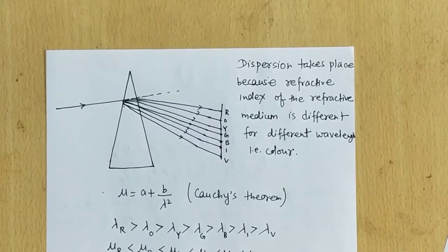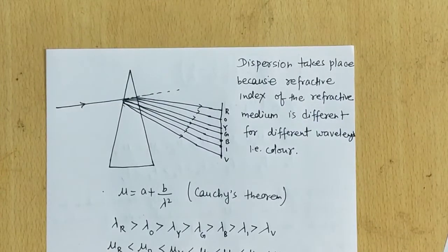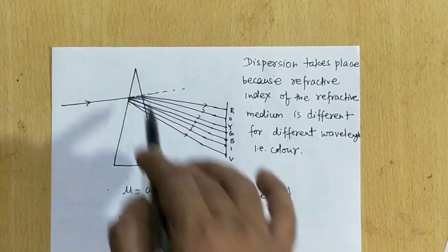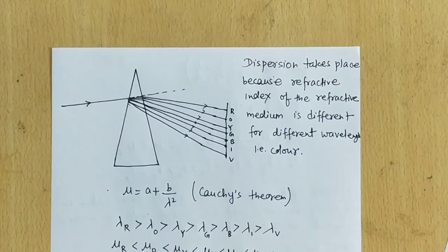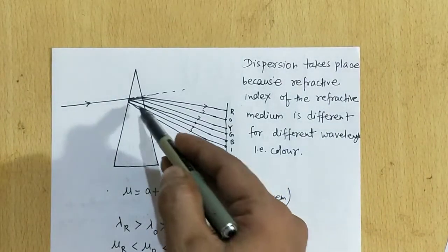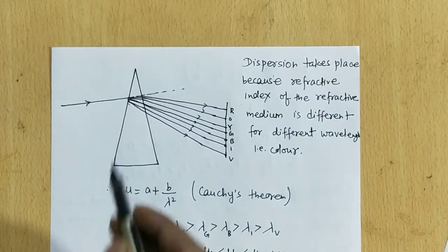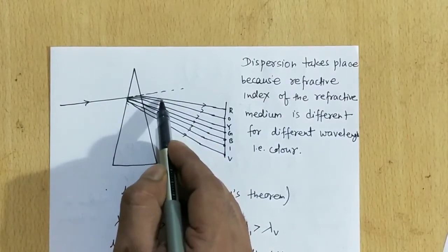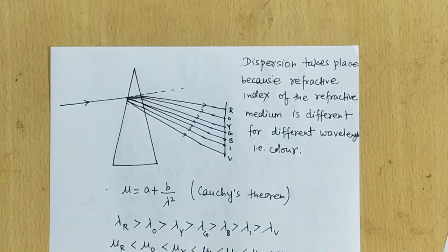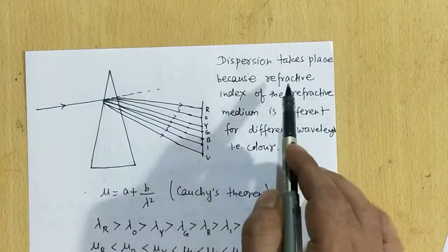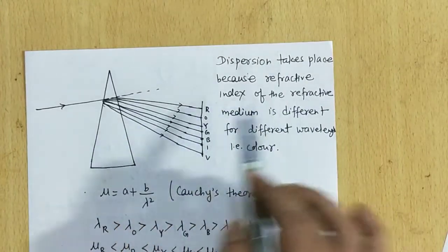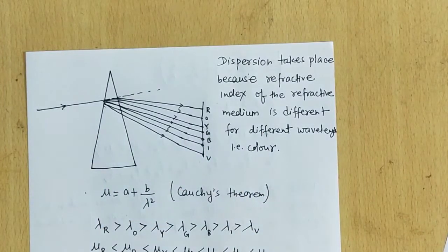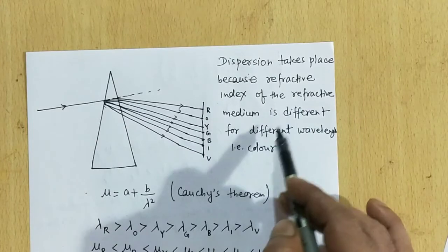In this video we will see some effects of color like focal length and different factors. We know that when white light passes through a prism, it spreads into its constituent colors. Violet color is at the bottom and red color is at the top. The deviation of violet color is maximum from the initial direction and deviation of red color is minimal. This dispersion occurs because the refractive index of the medium — in this case the glass of which the prism is made — is different for different wavelengths.